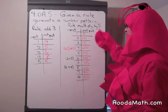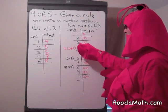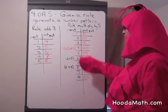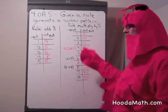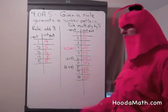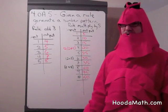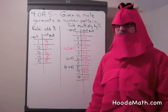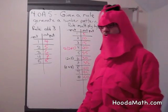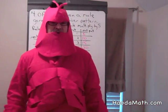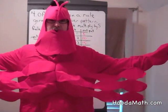And odd — like 1, 3, 5, 7, 9 — times an odd gives us an odd ending. But I'm anything but odd. I am the Math Lobster.